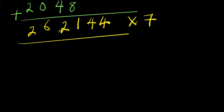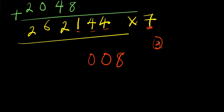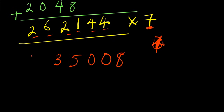Then we multiply this by 7 to get our final answer. 7 times 4 is 28, carry 2; 7 times 4 again is 28 plus 2 is 30, carry 3; 7 times 1 is 7 plus 3 is 10, carry 1; 7 times 2 is 14 plus 1 is 15, carry 1; 7 times 6 is 42, plus from 7 times 5 is 35, giving 45 carry; 7 times 2 is 14 plus 4 is 18.